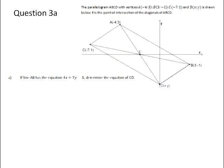Question 3a. The parallelogram ABCD with vertices A, negative 4 and 3, B, 3 and negative 1, C, negative 7 and 1, and D, X and Y is drawn below. E is the point of intersection between the diagonals.